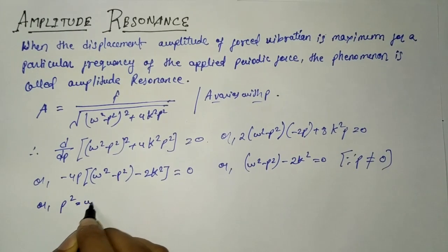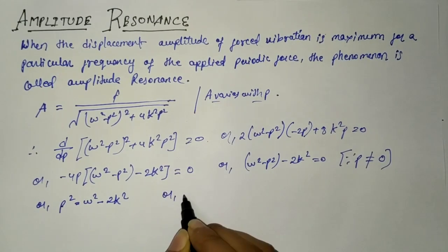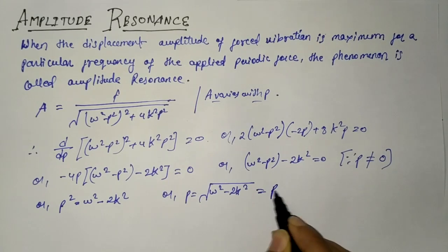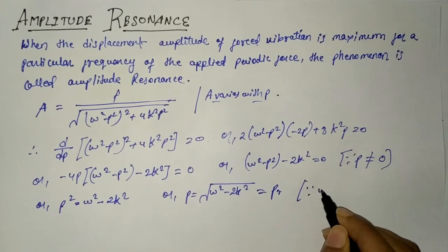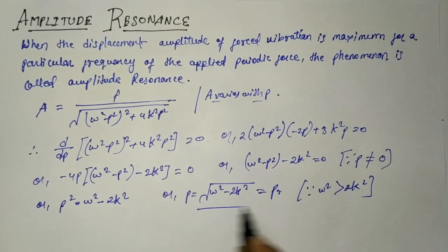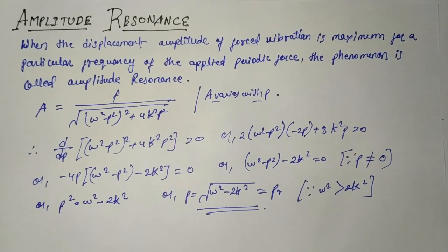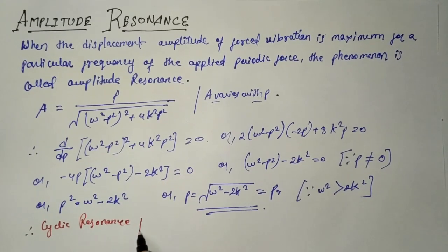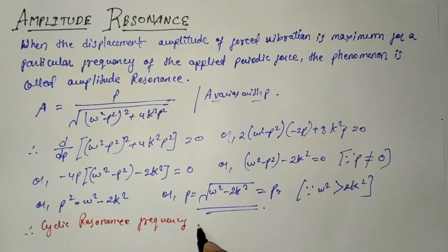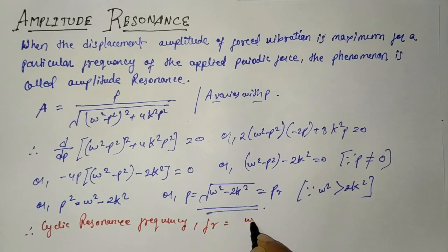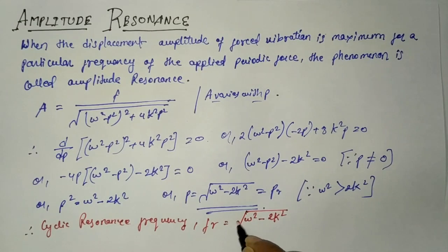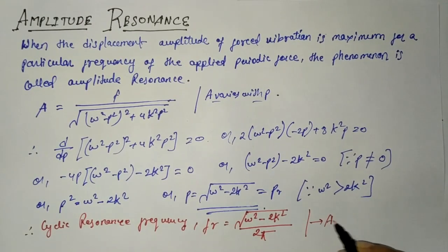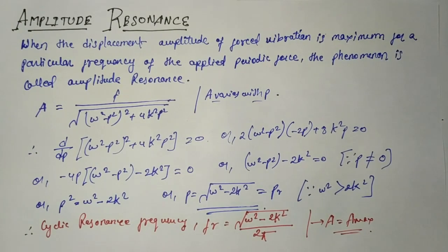So p squared equals omega squared minus 2k squared, let this be denoted as p_r. Since omega squared must be greater than 2k squared for this condition to hold, the cyclic resonance frequency is given as f_r equals square root of (omega squared minus 2k squared) divided by 2pi, at which amplitude A equals A_max. These are the conditions and values for amplitude resonance.